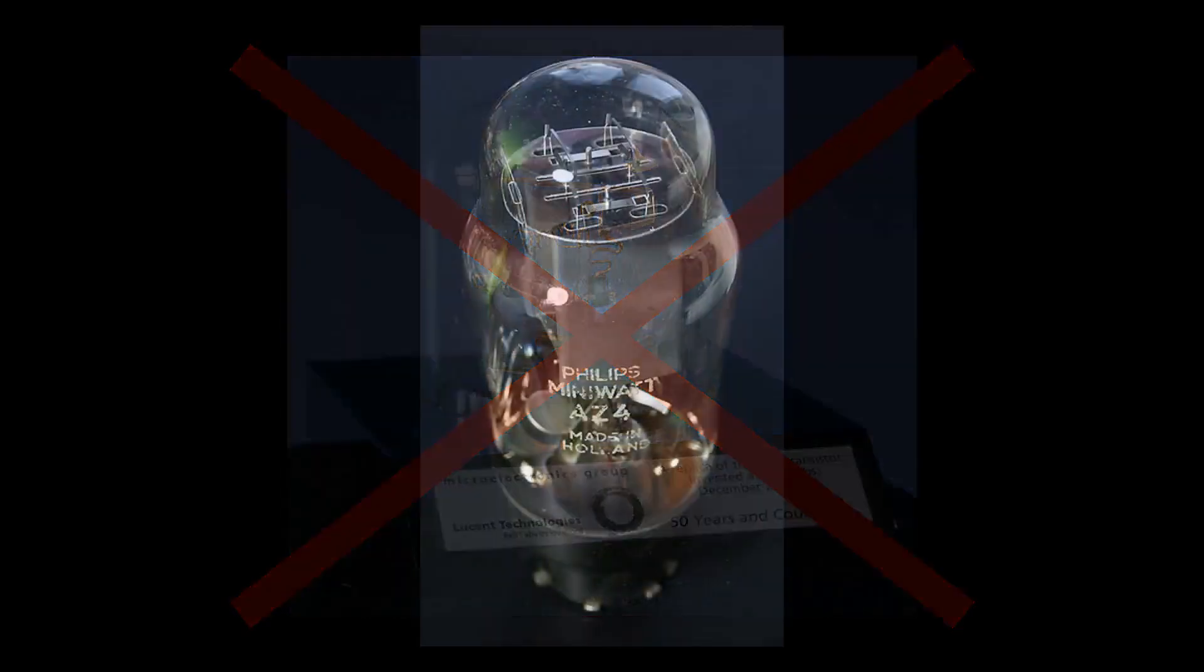The transistor hasn't been invented yet. So you have to use vacuum tubes. And vacuum tubes are expensive and unreliable. So you want to use as few of them as possible. How do you do it?